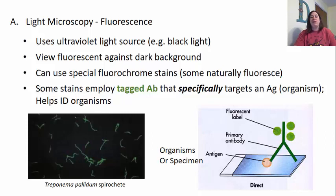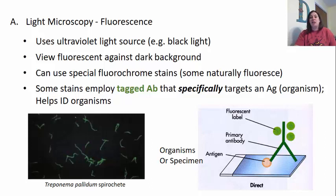Another important type of light microscope is fluorescence. This uses ultraviolet light sources like a black light, and specimens can be viewed fluorescing against a dark background. You have to use a special kind of stain in order to get it to glow and be seen on that black background. Some organisms are naturally fluorescent and don't need the stain, but most would need to be stained. Some stains use a tagged antibody that specifically targets an antigen or protein found on the organism, helping us identify certain organisms based on markers found on their cell membranes or cell walls.